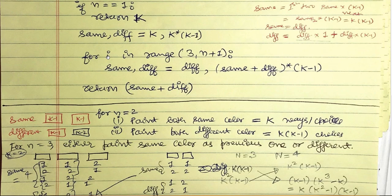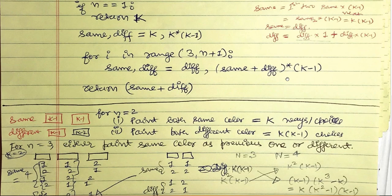From here we use dynamic programming with a loop: for i in range(3, n+1). In each iteration, new_same = diff, and new_diff = (same + diff) * (k-1). We update same and diff accordingly. Finally we return same + diff as the total number of valid ways.